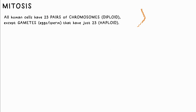Eukaryotic cell nuclei contain DNA which is stored in several chromosomes. Humans have 23 pairs of these in every nucleus, so we call them diploid cells. Gametes have half — just 23, not 23 pairs — so we call them haploid cells.